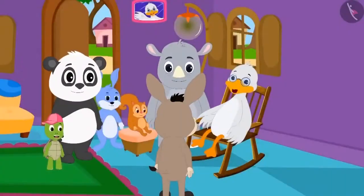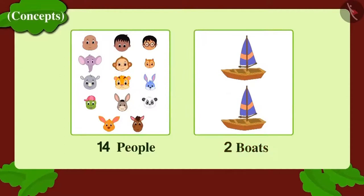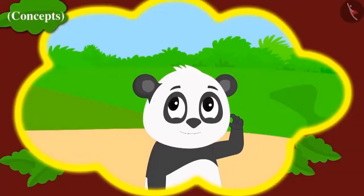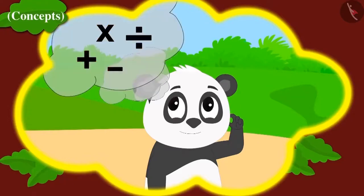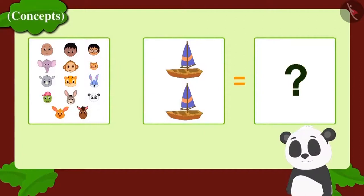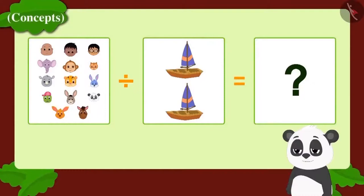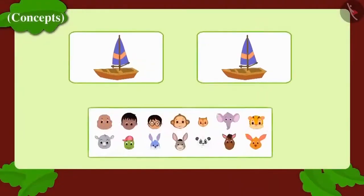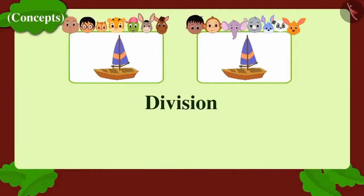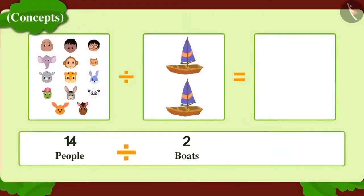One day, Badbole Chacha and 14 people in total were going fishing and had two boats. How many people could go in each boat? Golu needed to use the method of division. Whenever we need to divide objects equally or make equal groups, we use division. Using division, Golu found that 7 people could go in each boat.